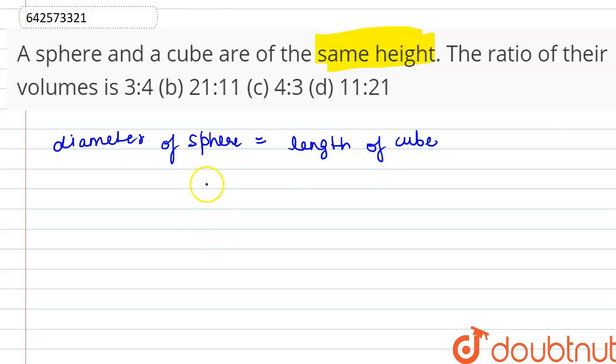That means we have d is equal to l, or we can also say that d is equal to 2r, so 2r is equal to l, or r will be equal to l by 2.